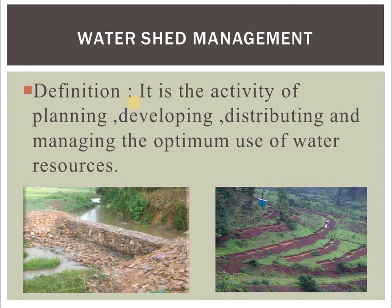Watershed management is the activity of planning, developing, distributing, and managing the optimum use of water resources. In a picture, you can see a gabion wall, which is a watershed management structure. It is constructed with stones stacked in layers and combinedly tied with wire mesh. That structure is constructed across a natural stream, and on the upstream side water is stored, which can be used for irrigation as well as drinking purposes.